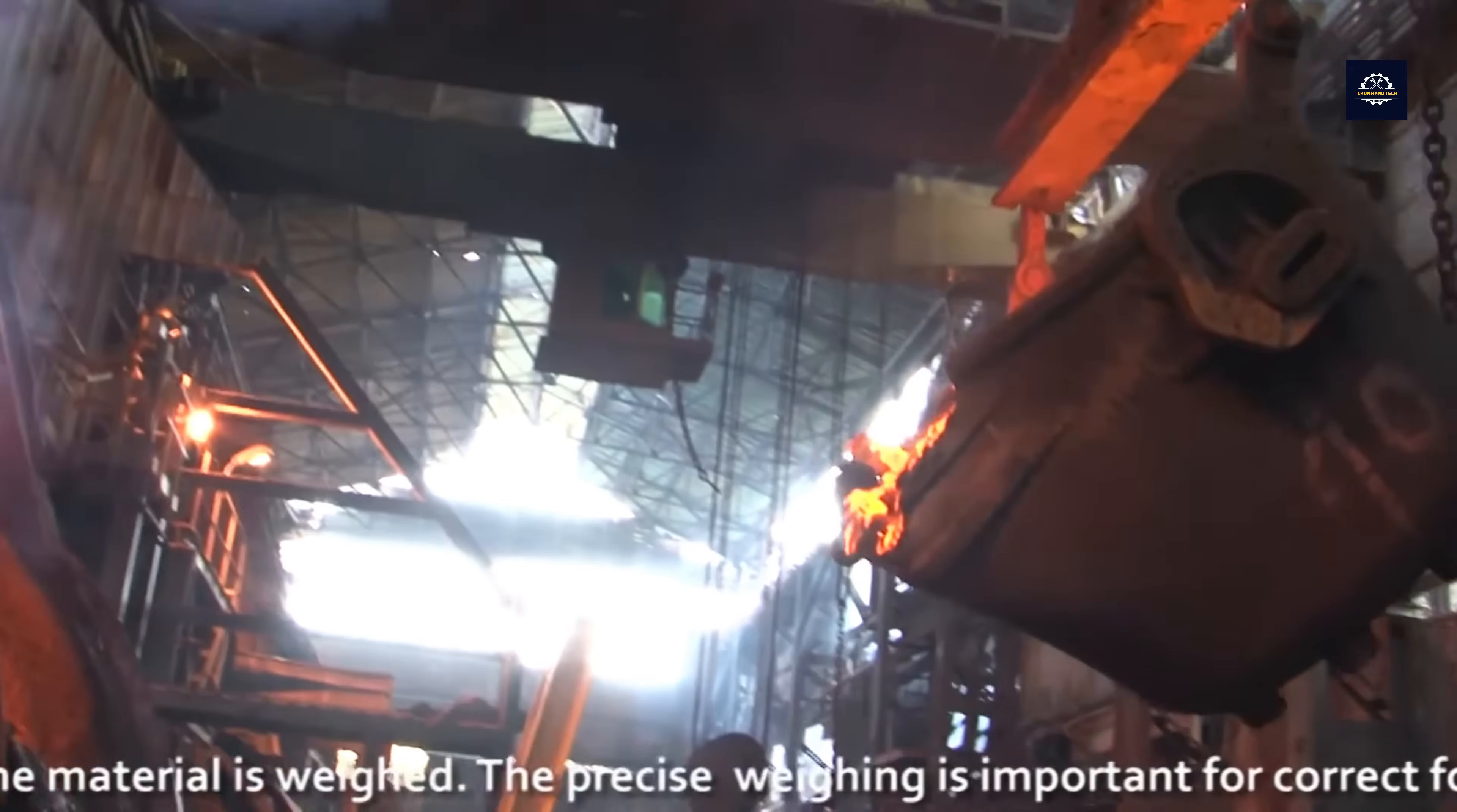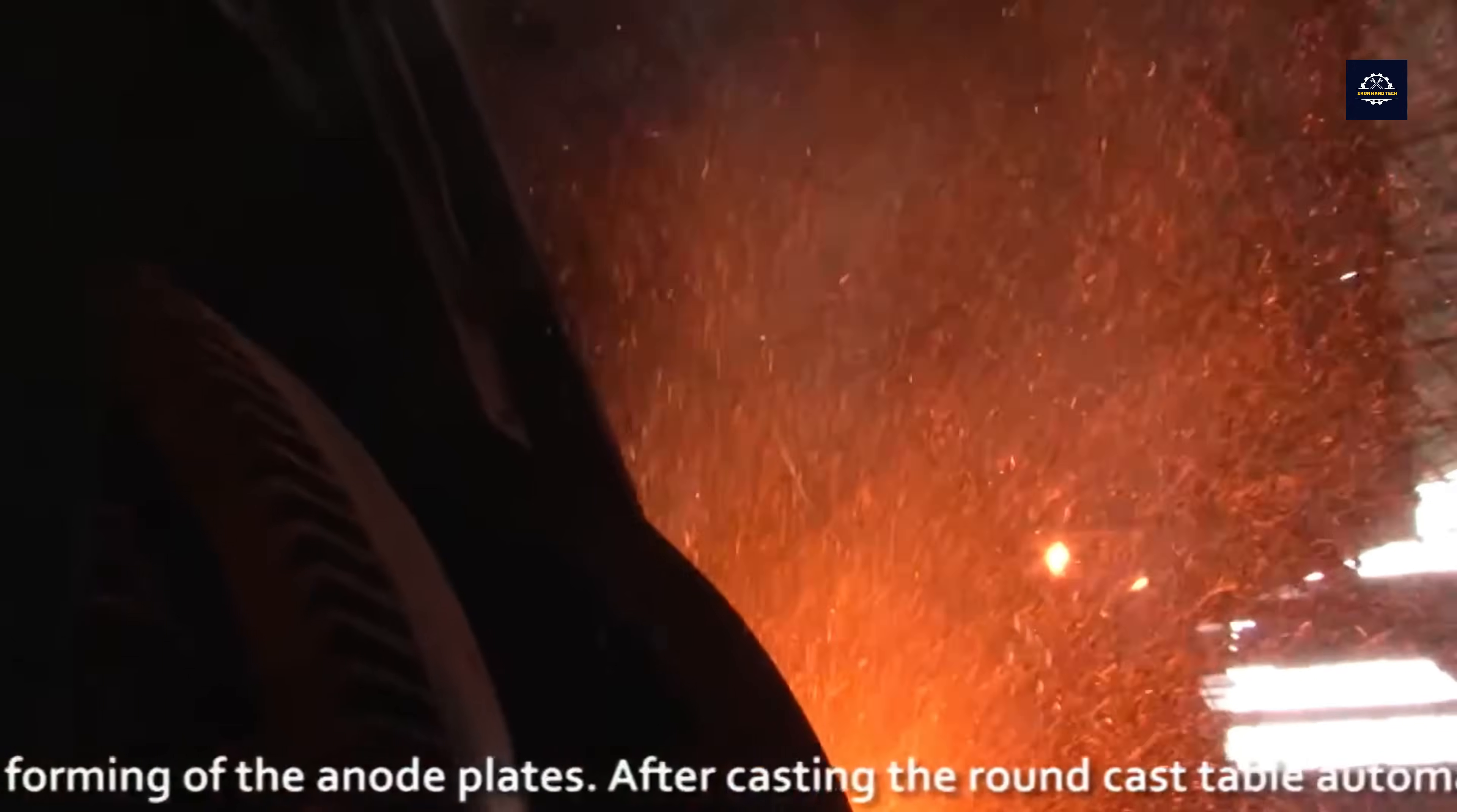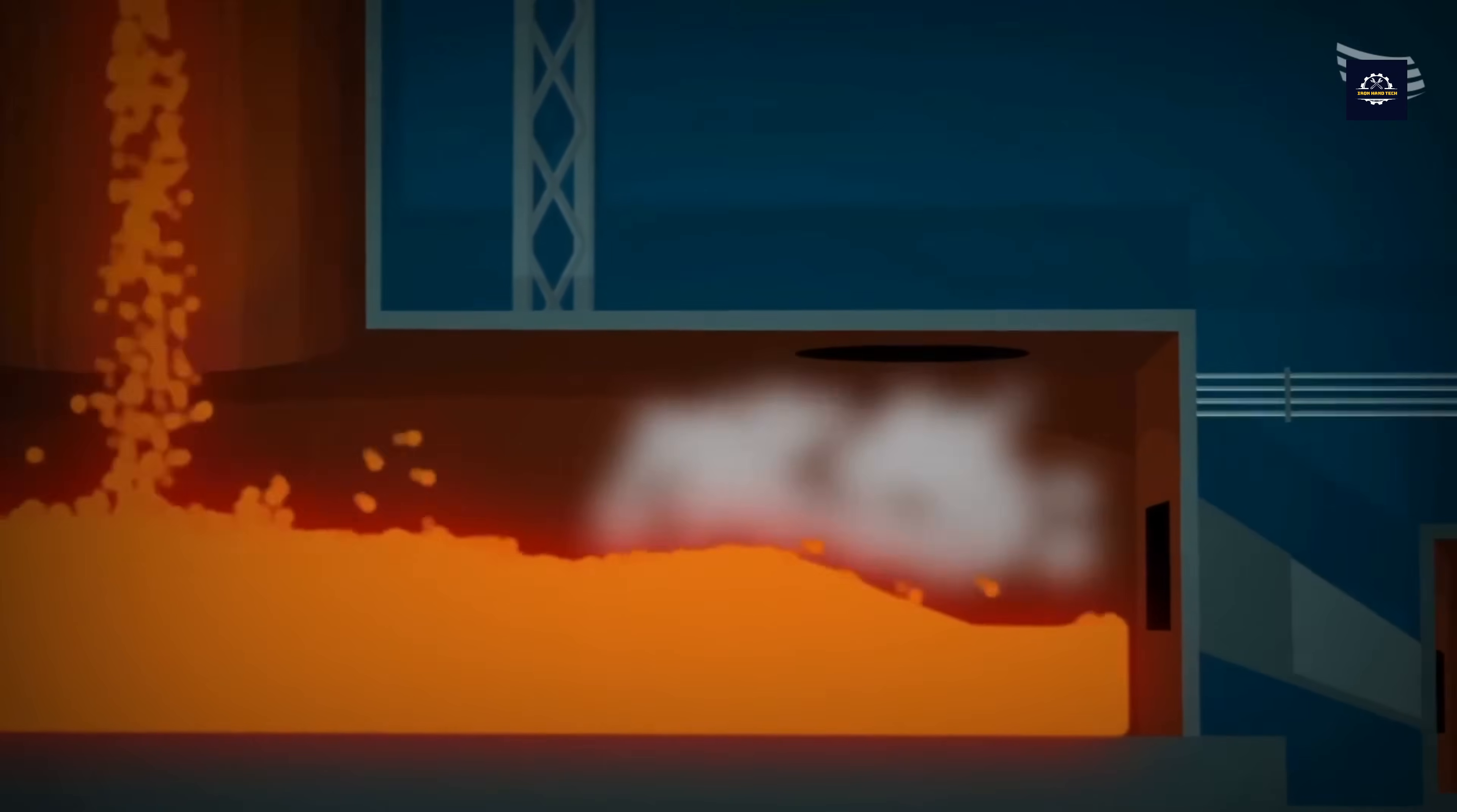The copper melting process takes place in large industrial furnaces where the copper is liquefied. In this high temperature environment, lighter impurities float to the surface and are removed, ensuring that the final product reaches the required purity.